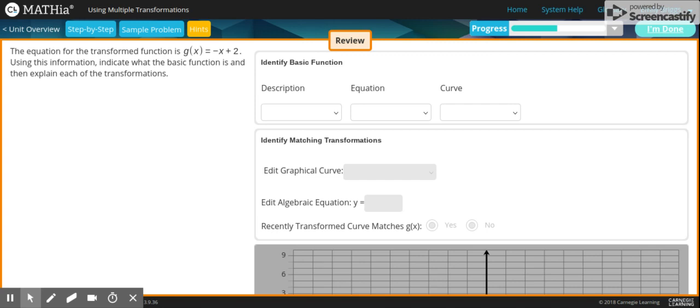Hi guys, so today we'll be using multiple transformations. The equation for the transform function is g(x) = -x + 2. Using this information, indicate what the basic function is and then explain each of the transformations.